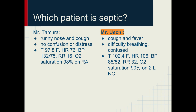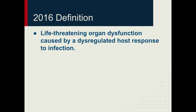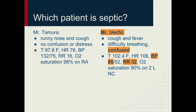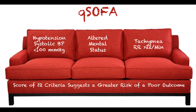The answer is that Mr. Uechi is the one who looks septic. You can probably tell just by looking at his vitals that he's sicker than Mr. Tamura. But what is it about his clinical picture that should make you think sepsis? Let's use a tool called the qSOFA score. This helps us to identify patients with sepsis. You're looking for patients with low blood pressure — that is, a systolic blood pressure of less than 100 — altered mental status, and a respiration rate of greater than 22. If they have two or more of these criteria, they're more likely to have a bad outcome. Mr. Uechi has an altered mental status, low blood pressure, and a high respiration rate — all suggestive that he has sepsis.